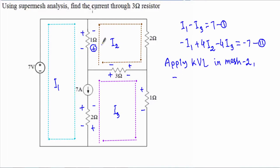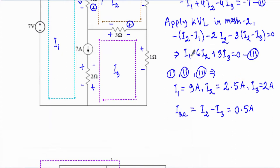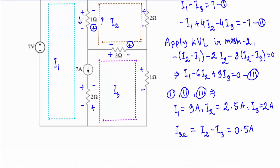Traversing mesh 2, I first encounter the 1 ohm resistor with positive polarity, giving a voltage of -(I2 - I1). Then I encounter the 2 ohm resistor, giving -2I2. Then the 3 ohm resistor with positive terminal, giving -3(I2 - I3) = 0. Simplifying gives Equation 3: I1 - 6I2 + 3I3 = 0.